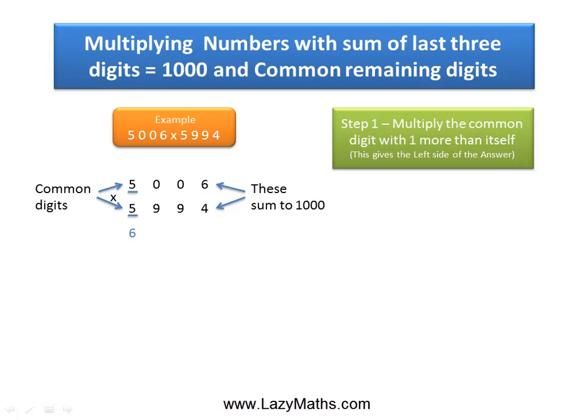So 1 more than 5 is 6. We multiply the 5 and 6 together to get 30 and this becomes the left hand side of the answer.